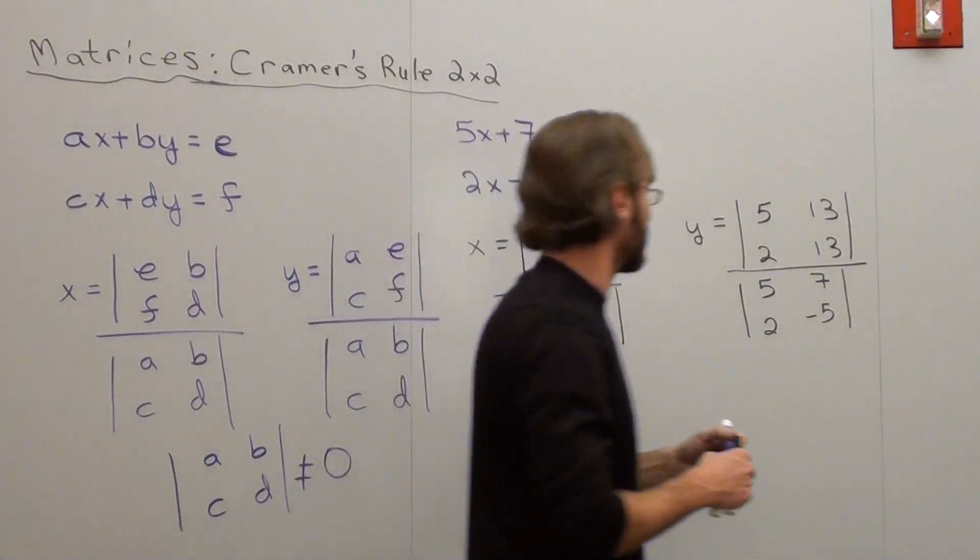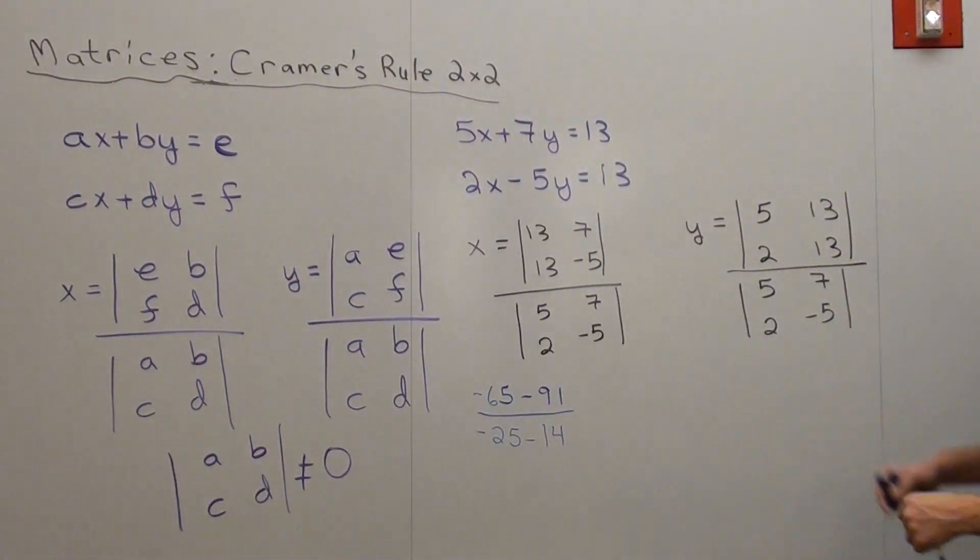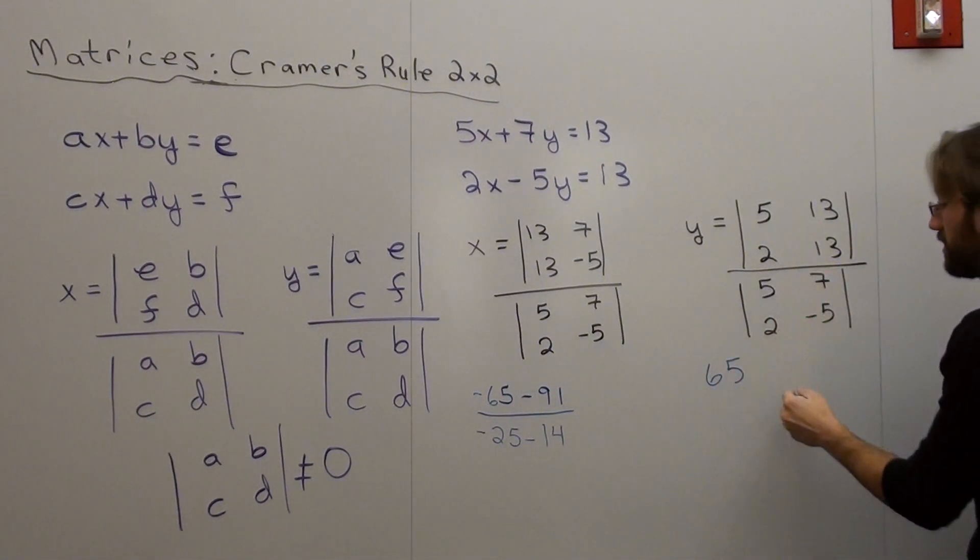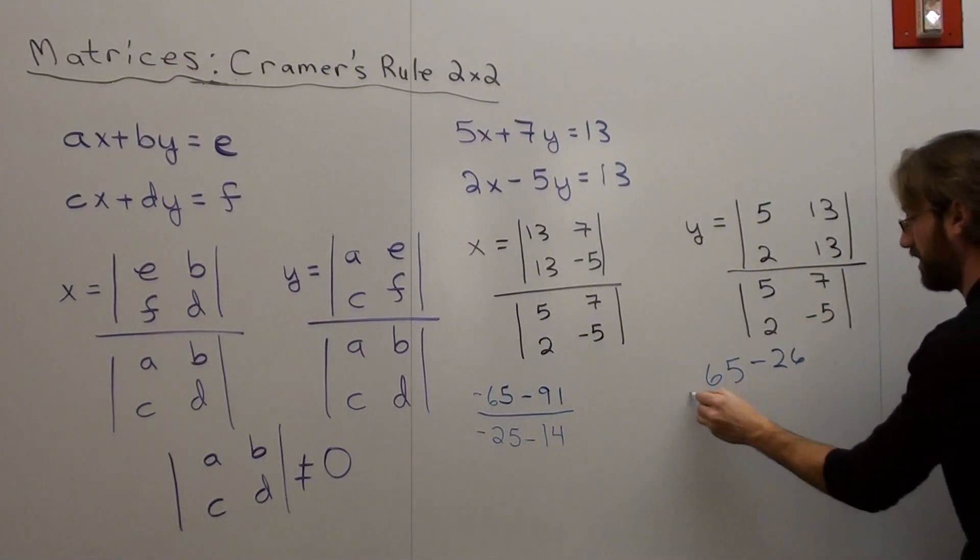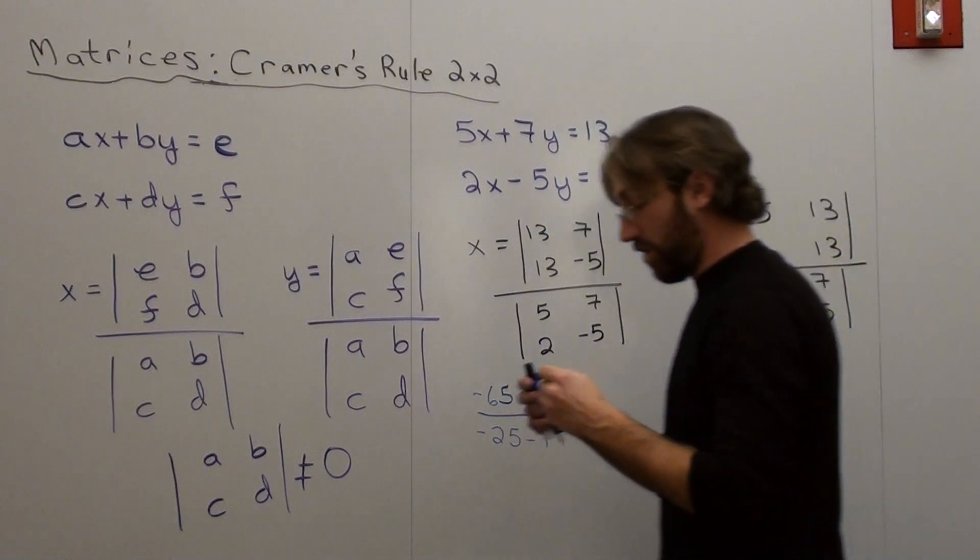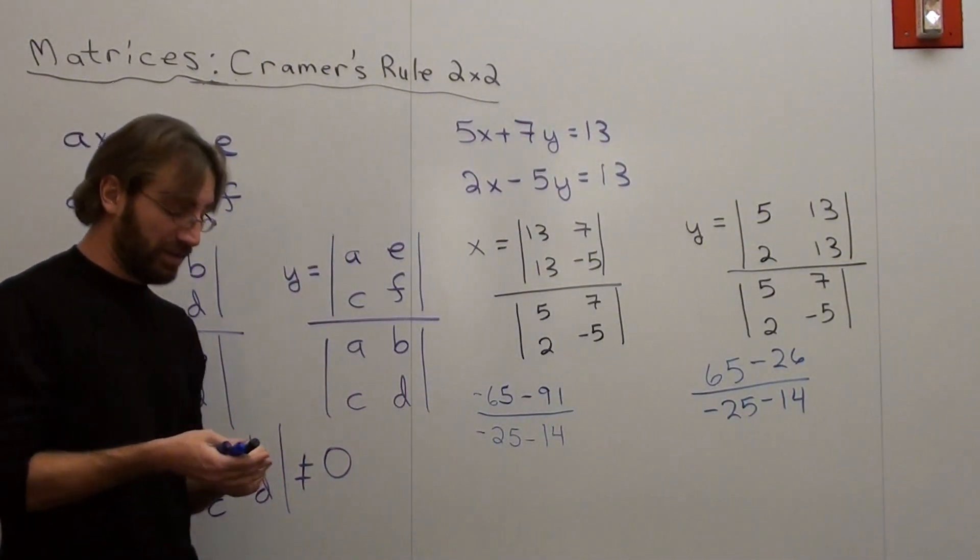I'm going to try to figure that one out while I'm writing this next one. Same thing here. 5 times 13, instead of negative 65, is 65. And 2 times 13 is 26. At least that one's easy. And that's over negative 25 minus 14. Hopefully I'm not going too fast for you. If I am, just pause it. Go ahead and check it out.